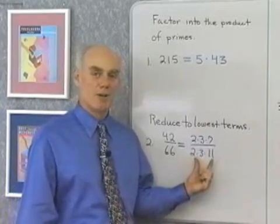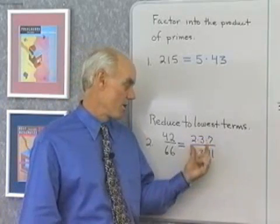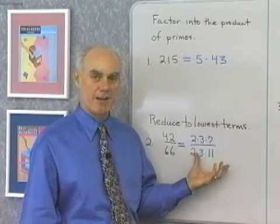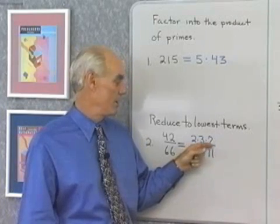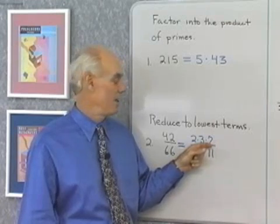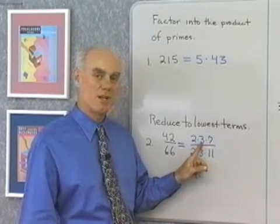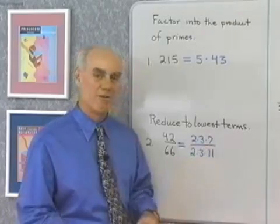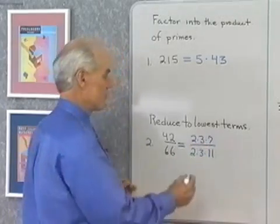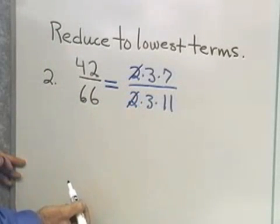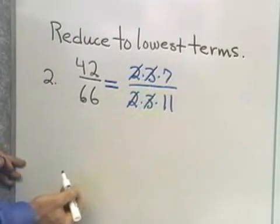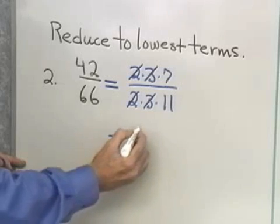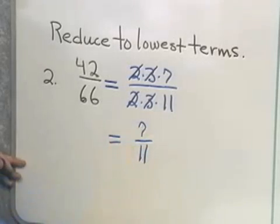Now, I've factored the numerator and denominator into the product of prime numbers. What I want to do next is divide the numerator and denominator by any factors they have in common. To show that division, what I'm going to do is just draw lines through the factors that the numerator and denominator have in common. So, when I divide numerator and denominator by 2, that's what it's going to look like. Then, I'll divide by 3. I divide out those factors. What's left in the numerator is 7, in the denominator 11.